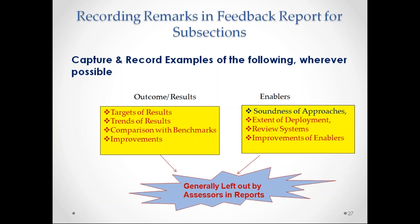When you record the feedback, you must give outcomes — meaning results, trend results, comparison with benchmarks — as well as enablers: soundness of approach, extent of deployment, review systems, and improvements of enablers. In the reporting format, there are four columns: serial number, checkpoint, yes/no/partially/not applicable, and findings. The third column is where you mark compliance; do not write anything more there. Then in the findings column, write how well it is deployed across sectors, what more they do, their review systems, what kind of improvements they have made to processes, and how sound the process is. That is the way you should write it.